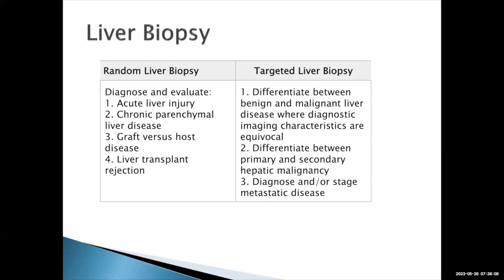Now we'll talk about liver biopsies. There are two general kinds. Random liver biopsies are done to diagnose and evaluate the nature of acute liver injury, chronic liver disease, graft-versus-host disease, or to evaluate for rejection in a liver transplant. For a targeted liver biopsy, you're looking at a specific lesion in the liver — determining whether it's a primary benign liver lesion, liver cancer, or metastatic disease such as colorectal or lung cancer.